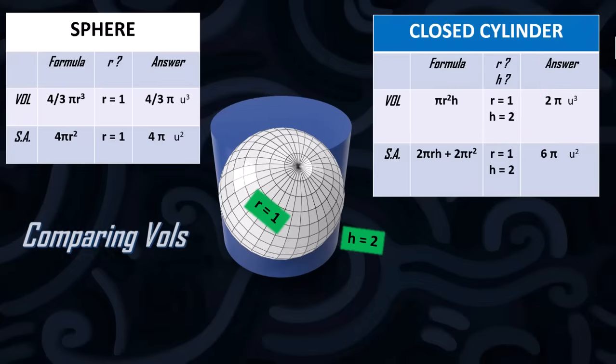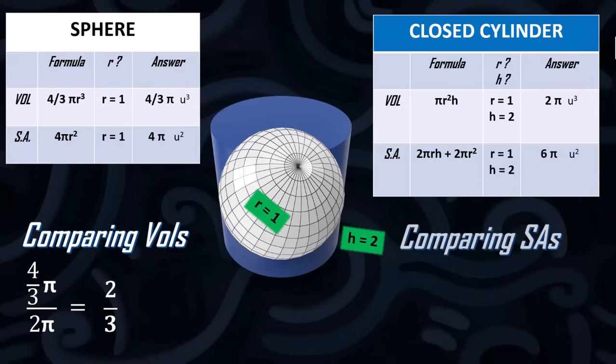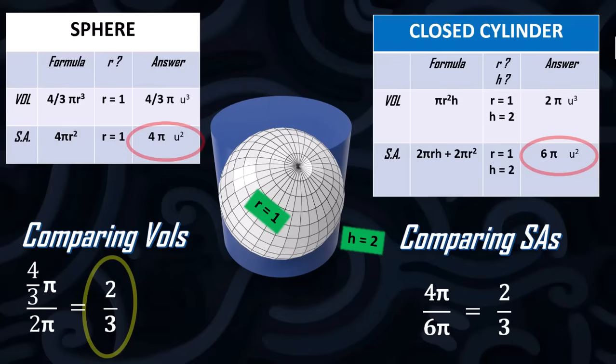Now we come to the interesting part. We're going to compare the volumes, and we'll put the smaller volume on the top of a fraction, and the larger volume on the bottom. So in the numerator we have 4 over 3 pi, and the denominator is 2 pi. And after some algebra, straightforward, the answer is 2 over 3. Now we're going to compare the surface areas. Well that will be simply 4 pi over 6 pi, which is also 2 over 3. And that's the remarkable thing. It's the same fraction.